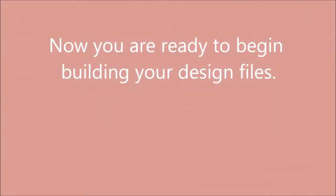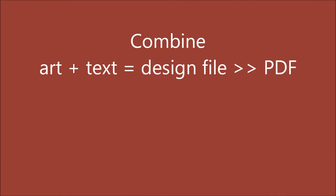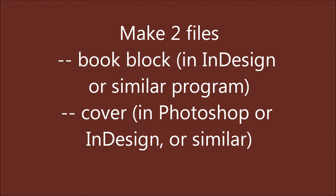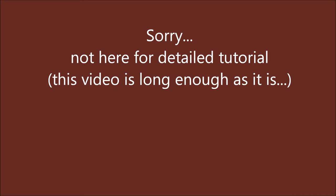The next step is to begin combining the elements — your prepared art and text — into the final two design files, which will become your two PDFs. You will now make two files. One will be the book block, made in Adobe InDesign or similar graphic design and layout software. The other file will be for your cover, which you may create in Photoshop or InDesign or similar software. I am not here to give a tutorial on how to use the software, but I will point out the particulars of using it for book construction.